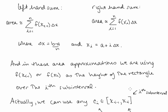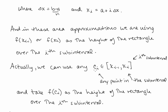In these approximations, we're using f of x i minus 1 or f of x i as the height of the rectangle over the i-th subinterval. But actually, we can use a function evaluation at any point c i in the interval x i minus 1 to x i — the i-th subinterval — and take f of c i as the height of the rectangle.